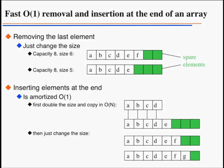Insertion at the end can be fast if we allocate more elements than we need. We distinguish between capacity — the number of elements allocated — and size — the number actually used. Removal at the end is constant: just change the size to 5. For insertion, once it's full, we double the size, and then the next several can be inserted for free. That way, insertion and removal at the end is amortized constant time.